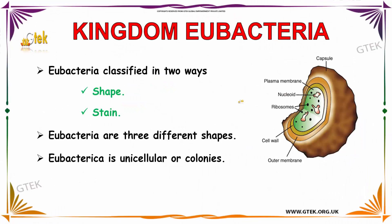Now let us talk about Kingdom Eubacteria. Eubacteria are classified in two ways: the first one is shape and the other one is stain. Eubacteria have three different shapes and are unicellular or colonial. They contain a capsule, plasma membrane, nucleoid, ribosomes, and cell wall. It also contains an outer membrane.